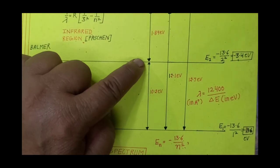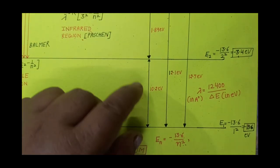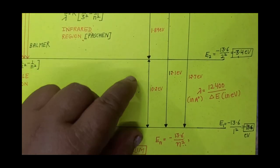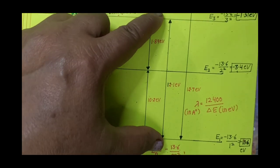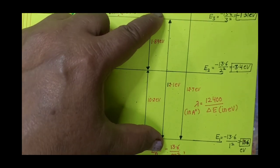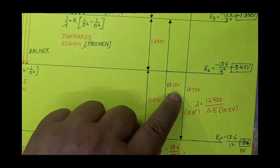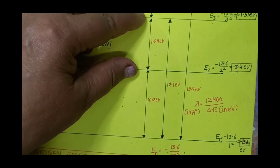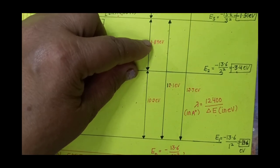The energy difference between the first and second energy levels is 10.2 eV. The energy difference between the second and first levels — that is, between level 2 and level 1 — is 12.1 eV. The energy difference between the third and second levels is 1.89 eV.